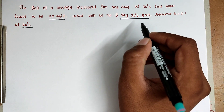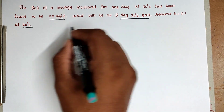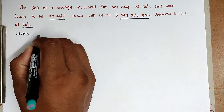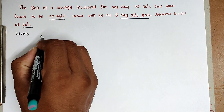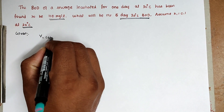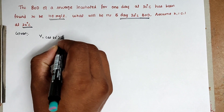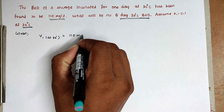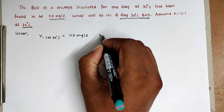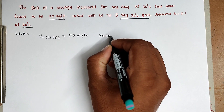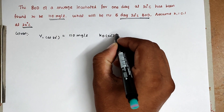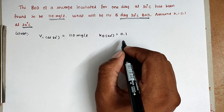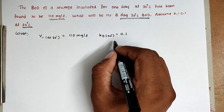So we have to understand these given values first. Y for 1 day at 30 degree Celsius is 110 milligram per liter. The KD value at 20 degree Celsius is given as 0.1. Now we have to find out the KD value at 30 degree Celsius.